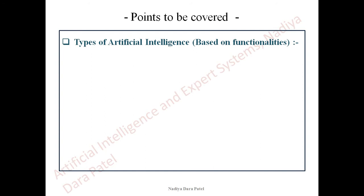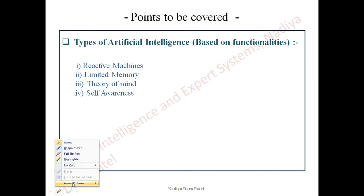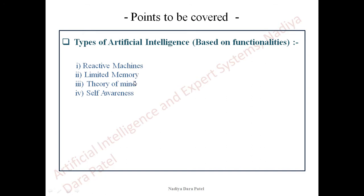These types are completely based on functionalities. If you pick up a device or application that is Artificial Intelligence enabled, we will categorize it based on what functions it performs. There are four basic types of Artificial Intelligence: the first is Reactive Machines, the second is Limited Memory, the third is Theory of Mind, and the fourth is Self-Awareness. A device may fall under one or more of these categories.